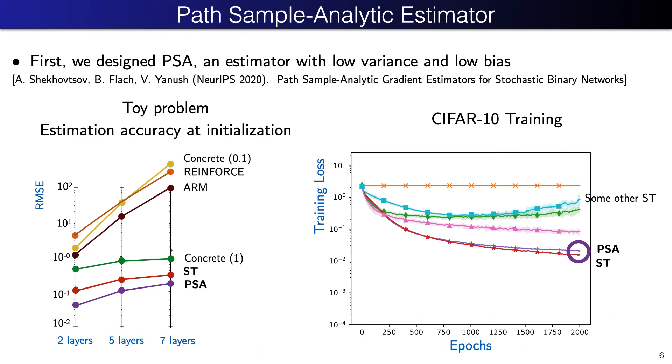So we tried the hard way first. In the NEORIPS 2020, we presented a new method called Pass Sample Analytic Estimator. We showed it to have a superior mean squared error in estimating the true gradient, in particular in deep networks. On the left, you see results using a small network with 2, 5, and 7 layers. The proposed PSA method is most accurate. However, to our surprise, in the CIFAR-10 classification problem, there was practically no gain in using it over a specific variant of straight-through method.